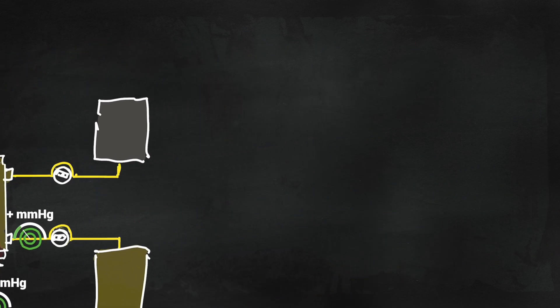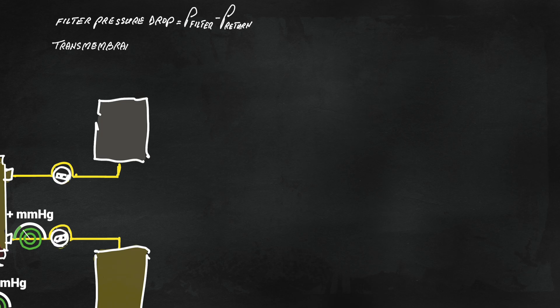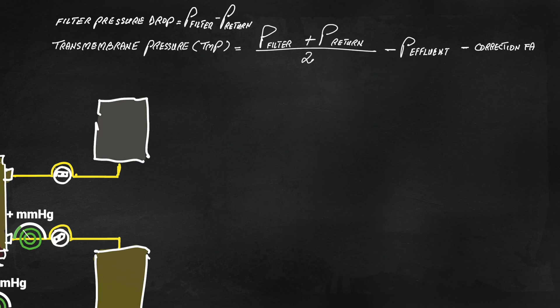You can use the filter and return pressures to calculate filter pressure drop, which represents the average pressure on the blood side of the membrane. Then subtract the effluent pressure from the dialysate side from the pressure drop. Then you'll have the transmembrane pressure.